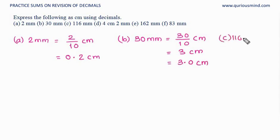C, 116 millimeter. Divide by 10, and that is equal to 11 whole 6 upon 10 centimeter. 11 is whole, then 6 at 10th place. 11.6 centimeter.